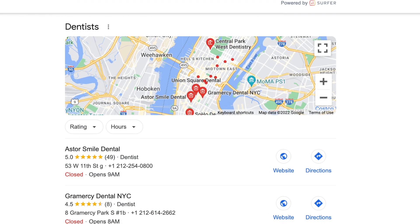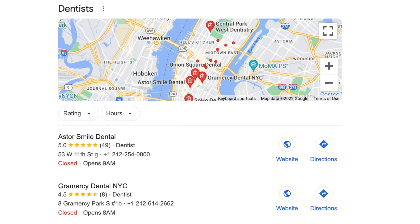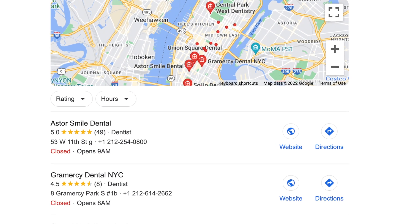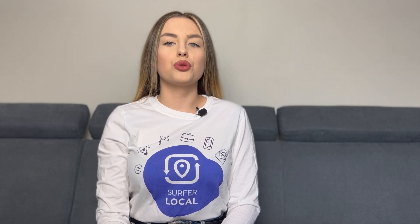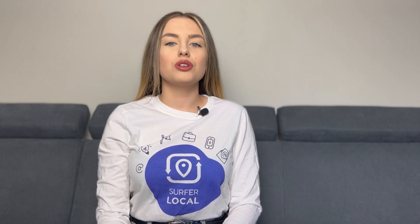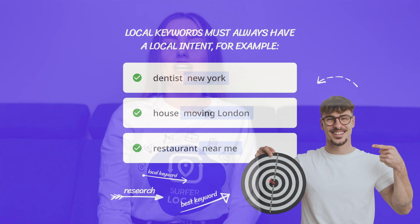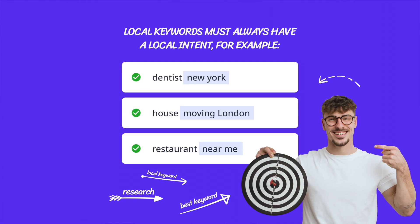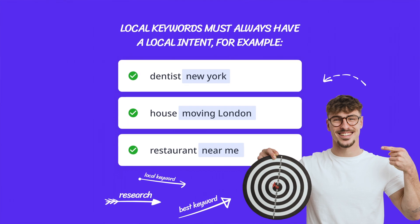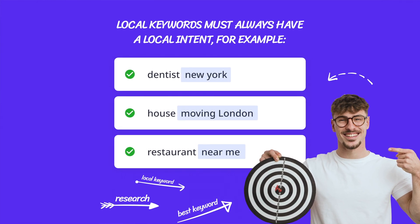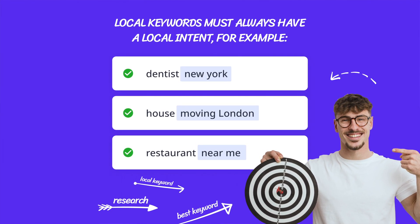If you want to increase your visibility on Google for potential clients, keywords can help you do that. Choose local keywords for which you want to increase your business's Google visibility in a specific area. Local keywords must always have local intent — for example, 'dentist New York,' 'house moving London,' or 'restaurant near me.'